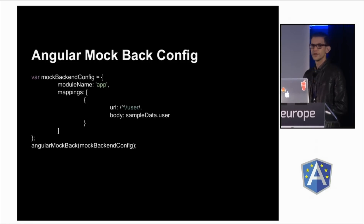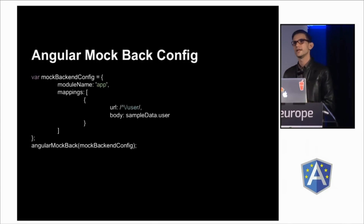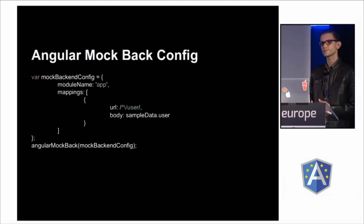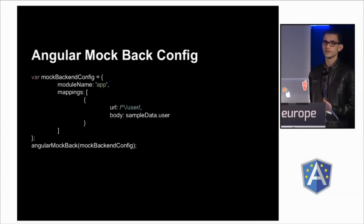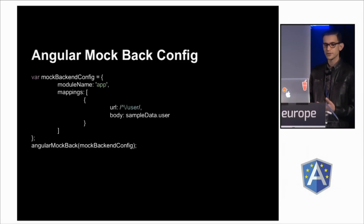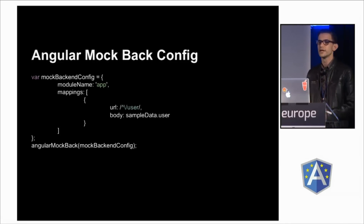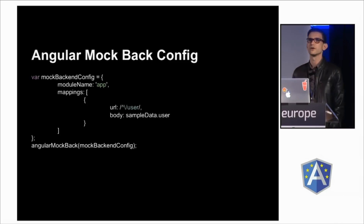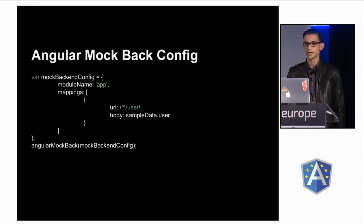It all starts with a config object. This config object needs a module name so it knows what to decorate, and then it needs an array of mappings. Each one of these mappings takes the same parameters as the HTTP backend's when function, but you also need the response and the status code. In this example, I'm using only the URL and the body simply because I'm defaulting to a method of GET and a status code of 200 — that way I save some keystrokes. Once you have your mapping, all you have to do is pass it to Angular Mockback and you're good to go.